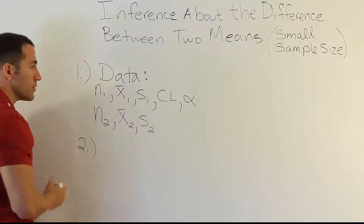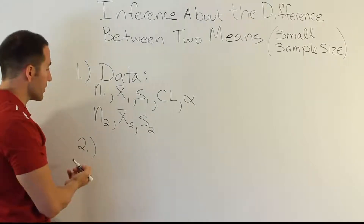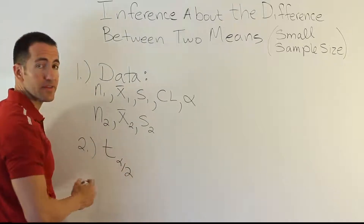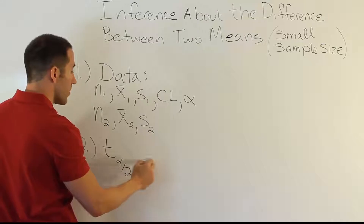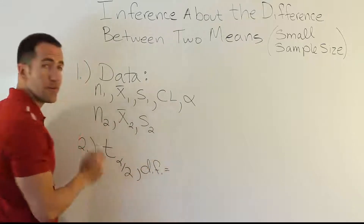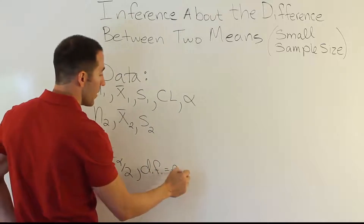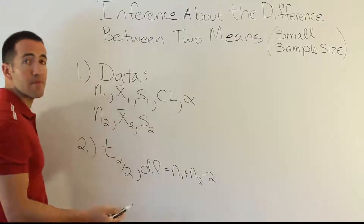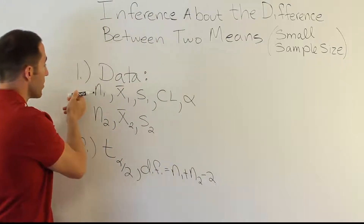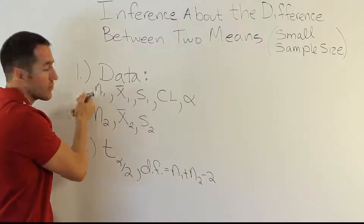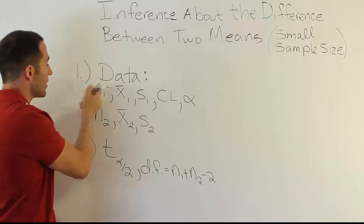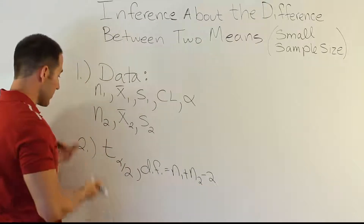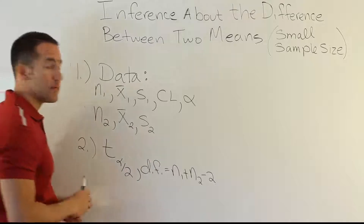Step 2 is where we get our table value. It used to be a critical z, but now we'll be working with the t-distribution, so we use t alpha divided by 2. The key thing to remember is that t values have degrees of freedom. In order to figure out the degrees of freedom, it's n1 plus n2 minus 2 — it's the sum of the two individual degrees of freedom. For each population, the degrees of freedom would be n minus 1, so n1 minus 1 plus n2 minus 1 gives you that quantity.